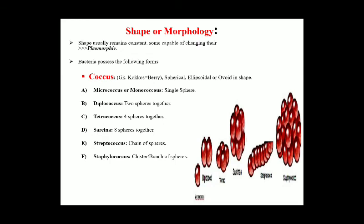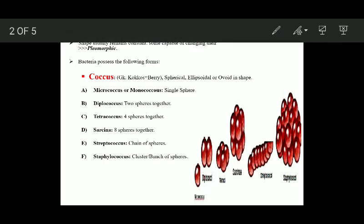Now let's move on to the shape or morphology of bacteria. Strictly speaking, most bacteria maintain a constant shape. However, there are some exceptions — some bacteria continuously change their shape and are therefore known as pleomorphic bacteria. So the majority of bacteria have a constant shape, but pleomorphic bacteria are those that continuously change their shape.